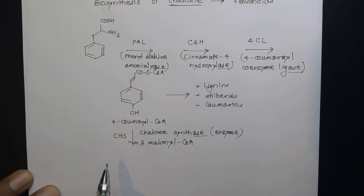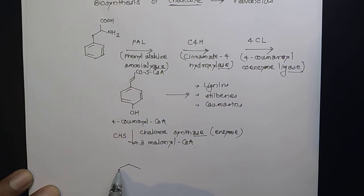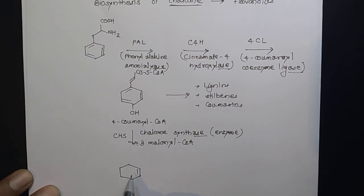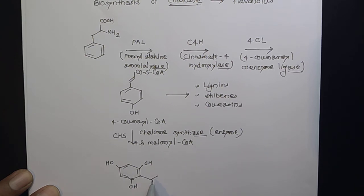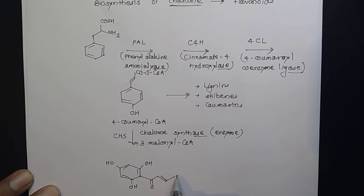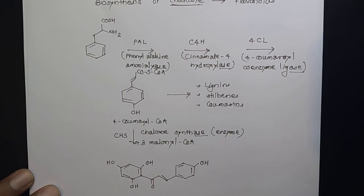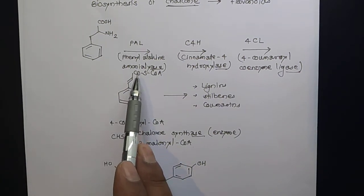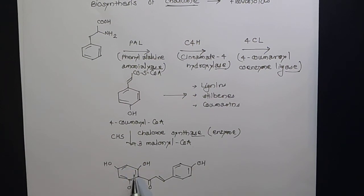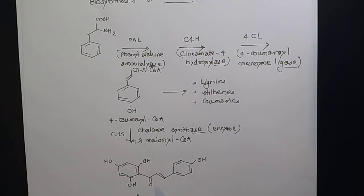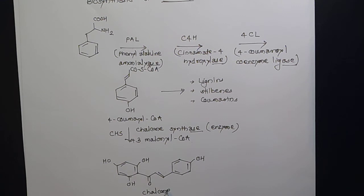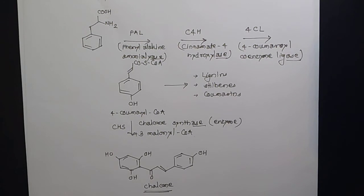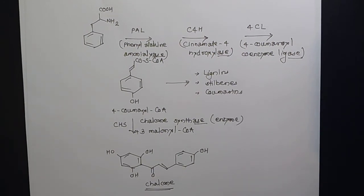You add 3 molecules of malonyl coenzyme A, and from this you get the famous compound called chalcone. The alpha-beta unsaturation is the specific property of chalcone-type compounds. So from the p-coumaroyl CoA intermediate plus malonyl coenzyme A, using chalcone synthase, you get chalcone — a key intermediate of biogenesis.